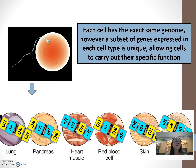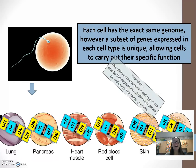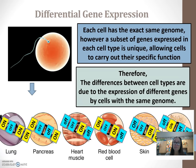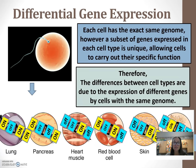Every cell has the exact same genome, but there are different subsets of genes expressed, allowing cells to be unique and carry out their functions. Therefore, the differences in cell types are due to the expression of different genes by cells with the same genome. We call this differential gene expression.